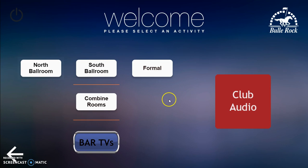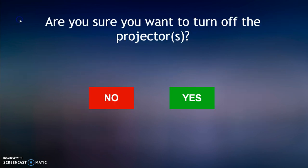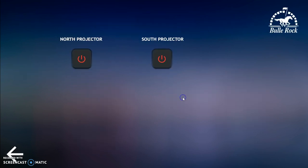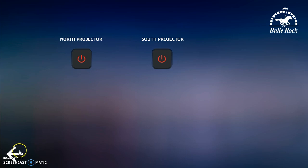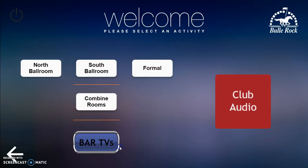Back on the main selector page, there's a button called club audio. There's also a small button up here that is the projector power button. If you click it, it asks if you're sure you want to turn the projectors off, and if you say yes you have the option to turn them off. If they're already off and you press it again, they'll just stay off. These are discrete commands.